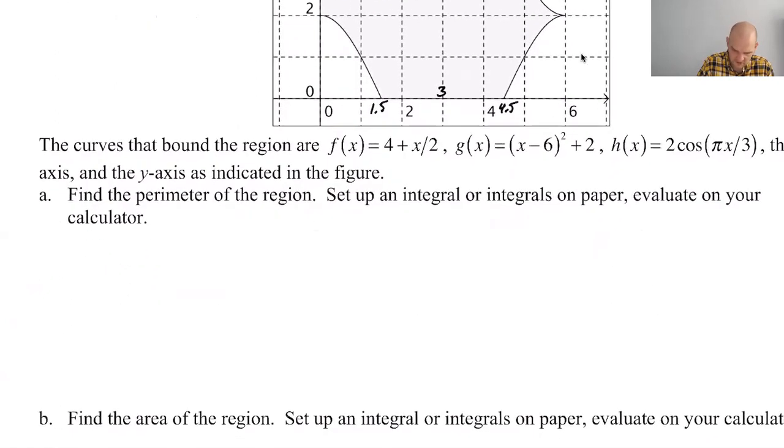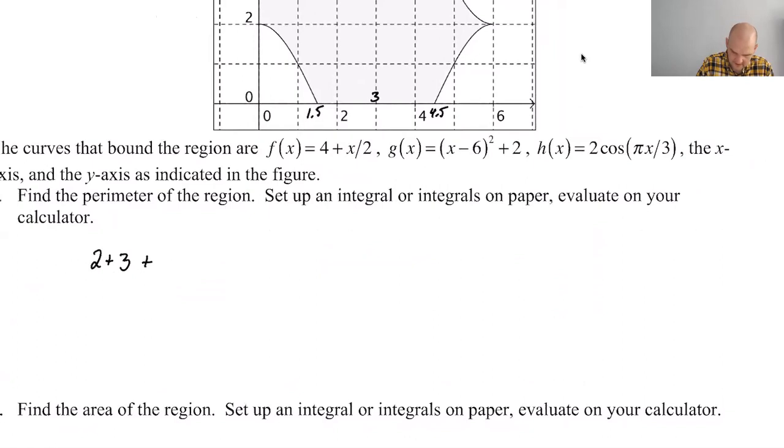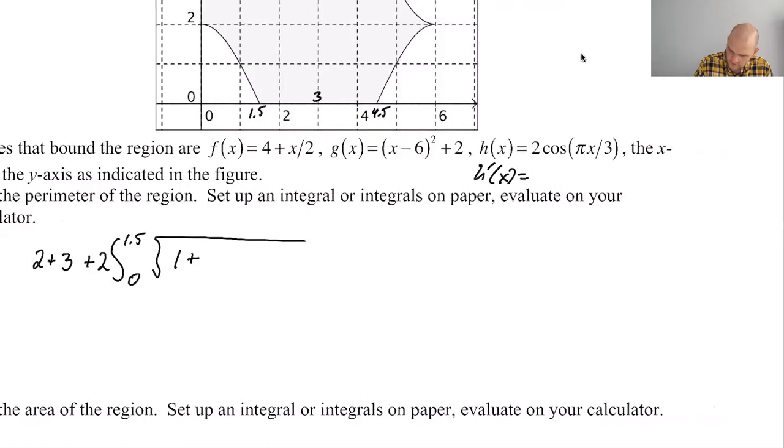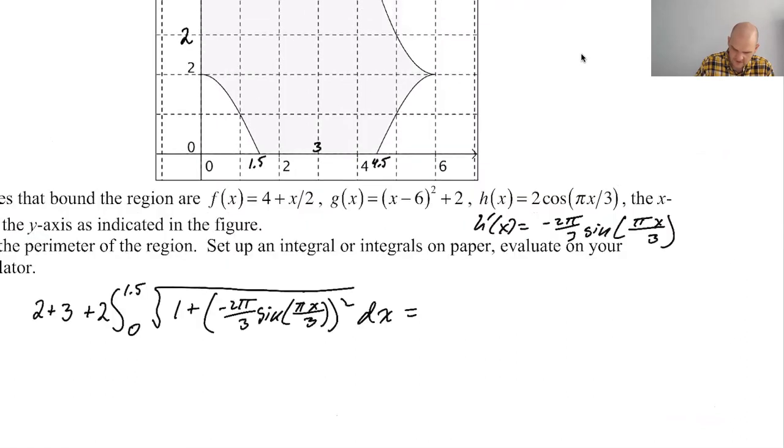So I'm going to say it's two plus three plus the integral. So I'm going to double this two times the integral from zero to 1.5 of the square root of one plus what is H prime? H prime of X is, oh boy, negative two pi over three sine of pi X over three. Okay. So I'm just going to put that in parentheses. Two pi over three sine of pi X over three.